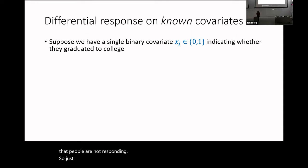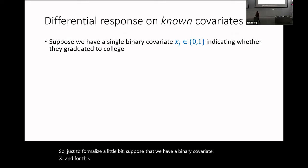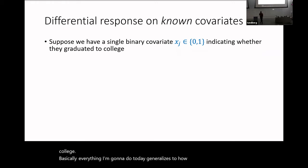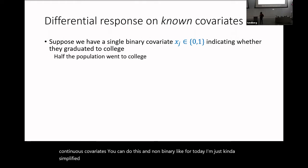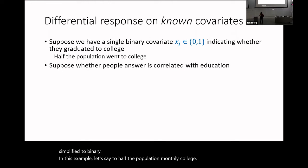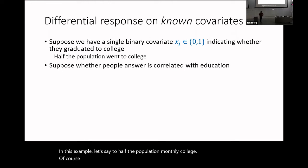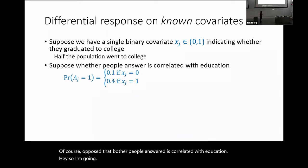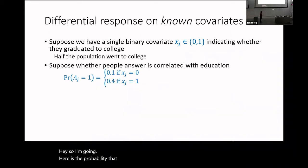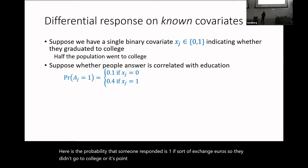To formalize a bit, suppose we have a binary covariate xj — for this example, whether someone graduated from college. Everything I'm going to do today generalizes to continuous or non-binary covariates, but I'll simplify to binary. For this example, let's say half the population went to college.